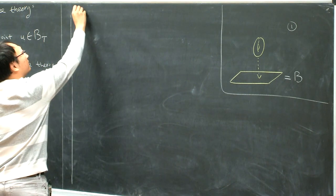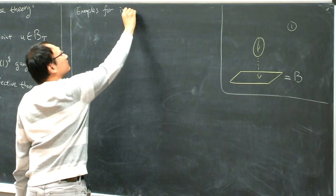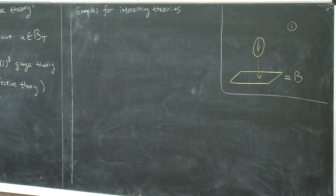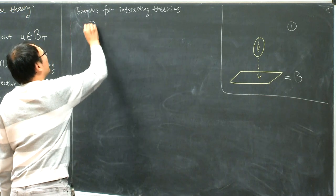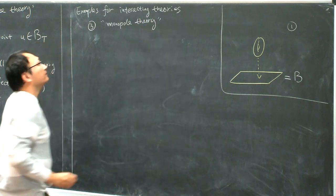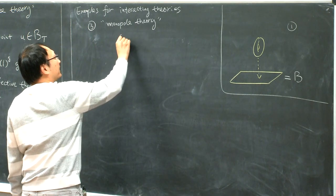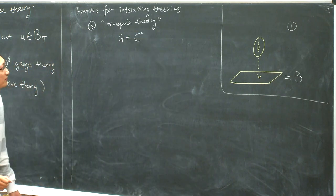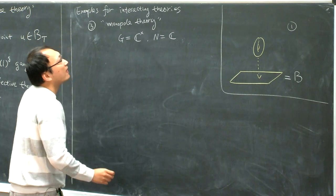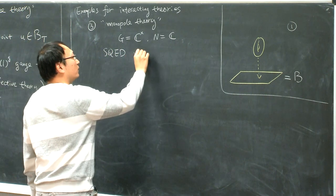Let me give some examples for interacting theories. Interacting is the opposite of being free. Example three is what I would call the monopole theory. You have already seen this multiple times in this program. The theory is characterized by: T being C*, and N equals one copy of C with the obvious C* action. For physicists, this theory is better referred to as SQED with one electron.